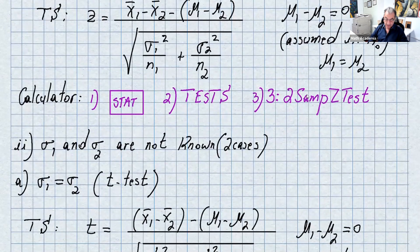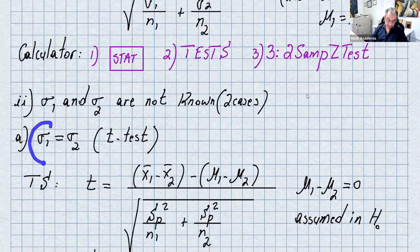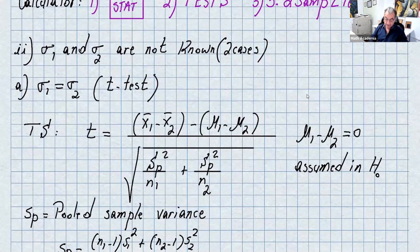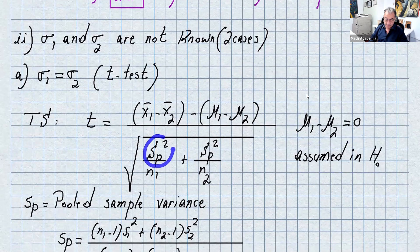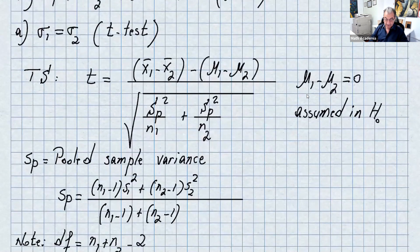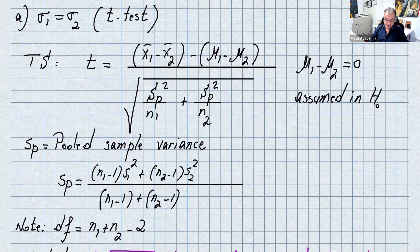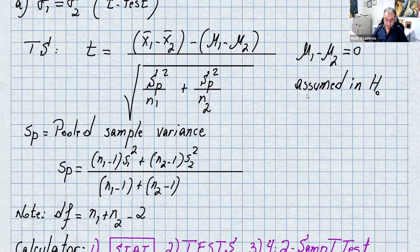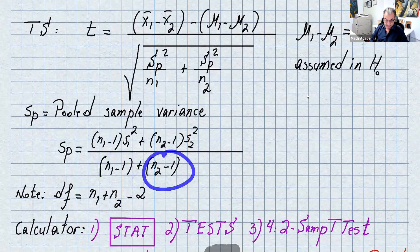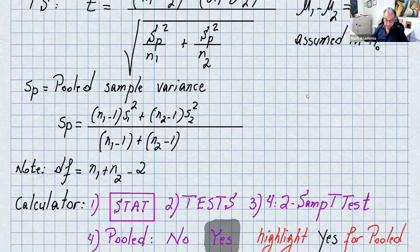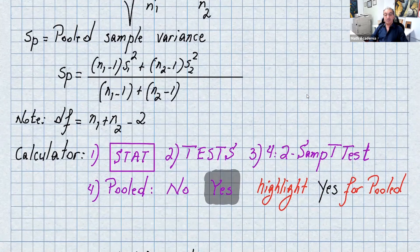If sigma1 and sigma2 are not known, we again have two sub-cases. Case A: assume sigma1 equals sigma2 — it's a t-test. The formula uses a pooled sample variance Sp, calculated as (n1 minus 1) times s1 squared plus (n2 minus 1) times s2 squared, all over (n1 minus 1) plus (n2 minus 1). The degrees of freedom are n1 plus n2 minus 2. Using the calculator is much faster — go to STAT, TEST, scroll to number 4, two-sample t-test, and say yes to pooled.